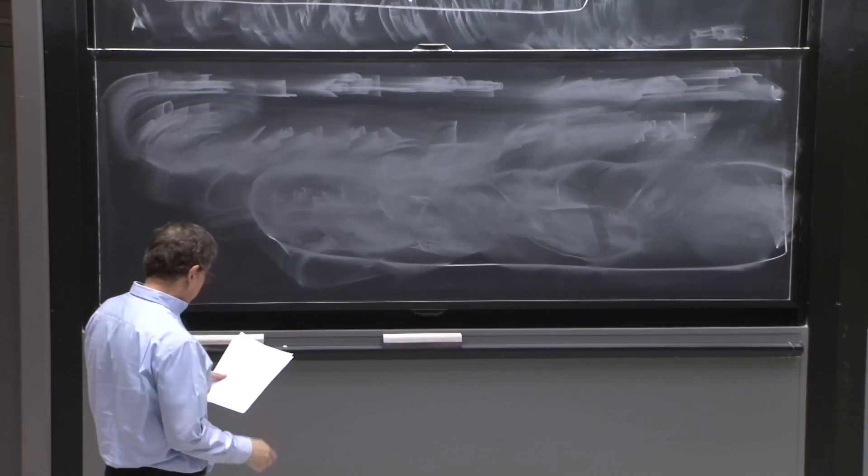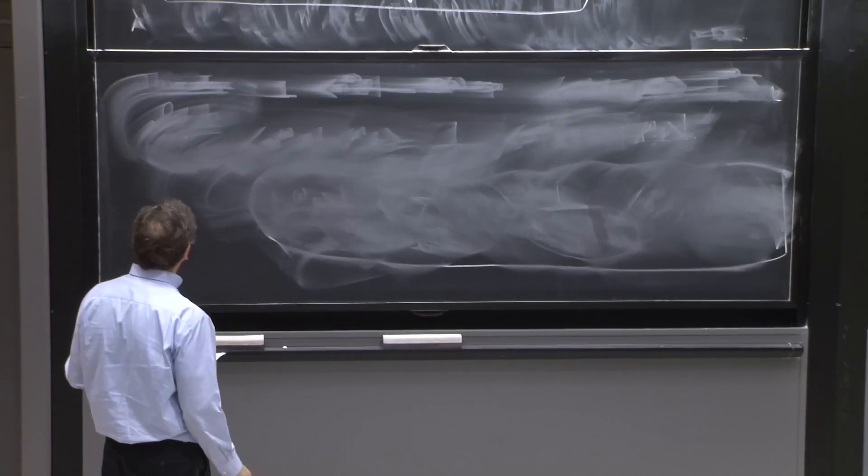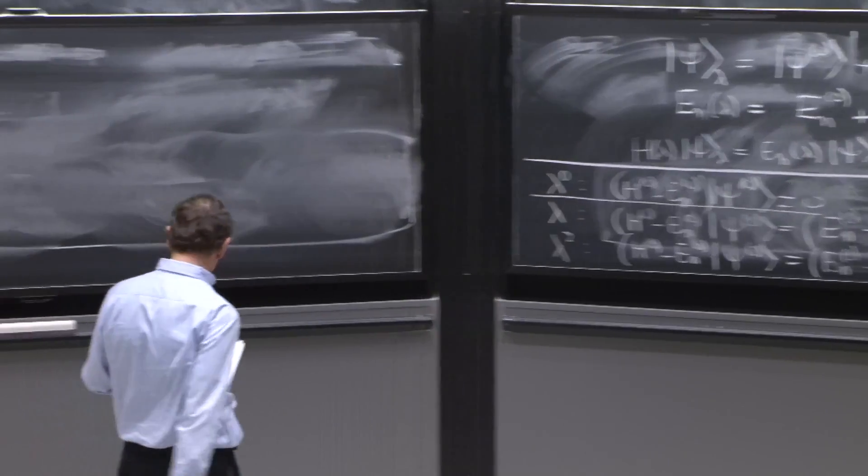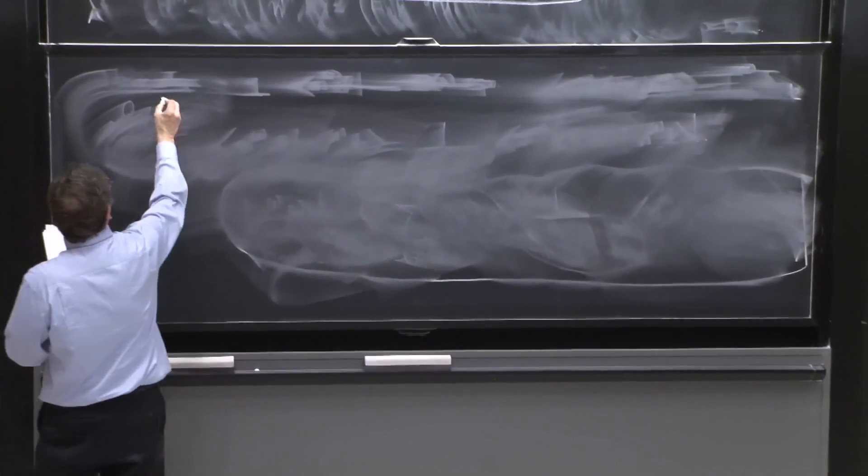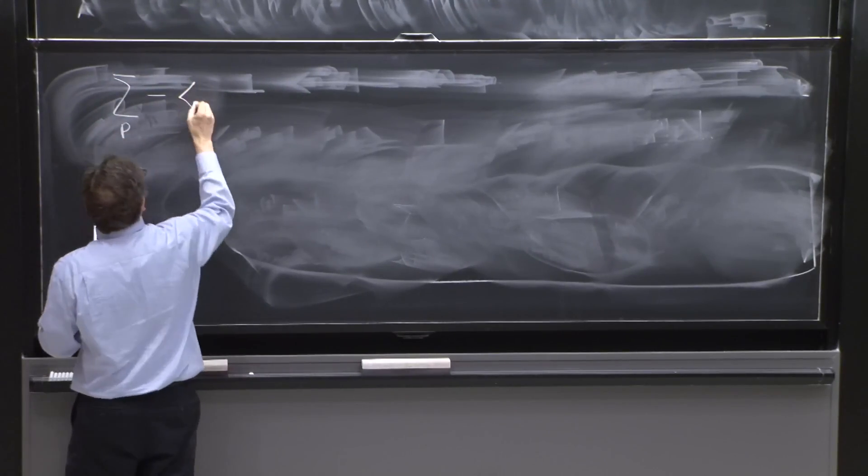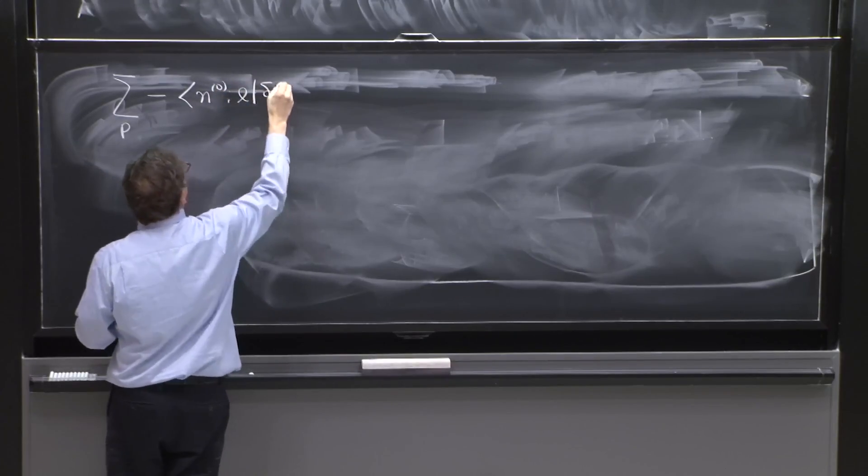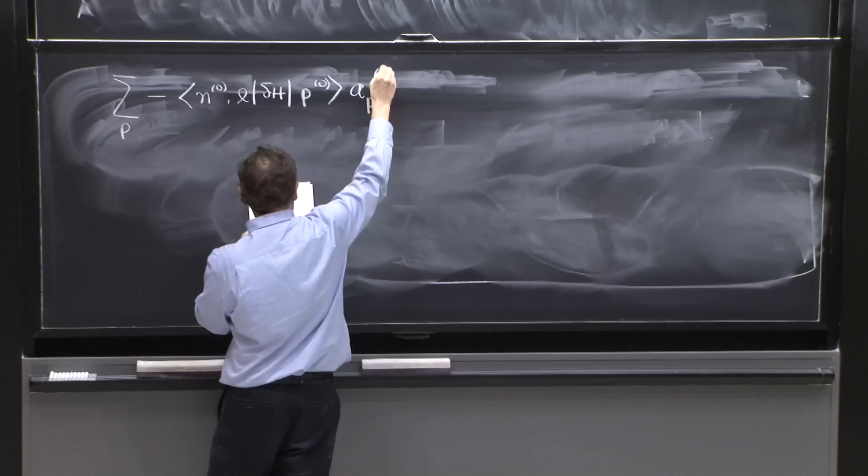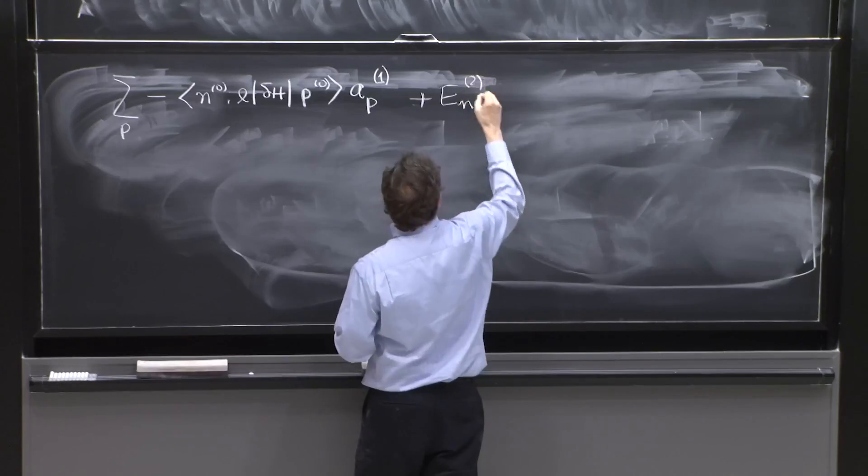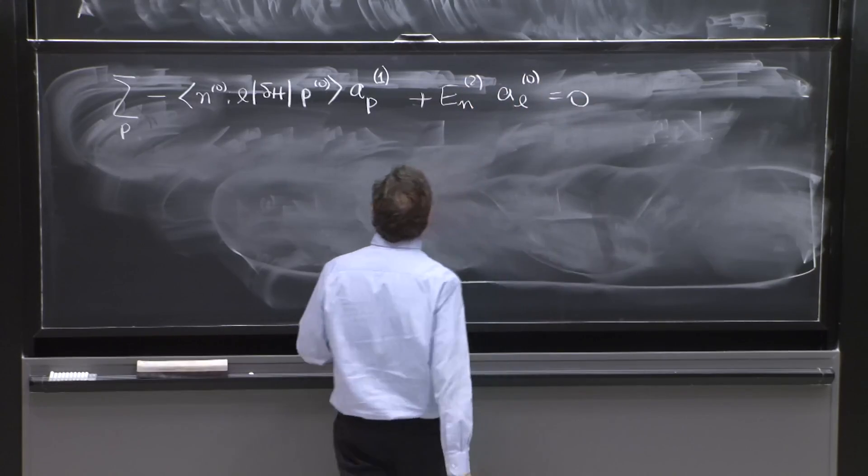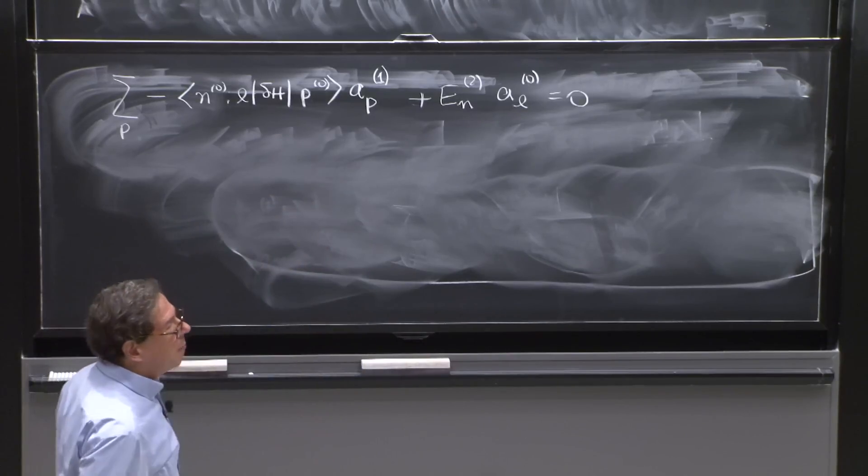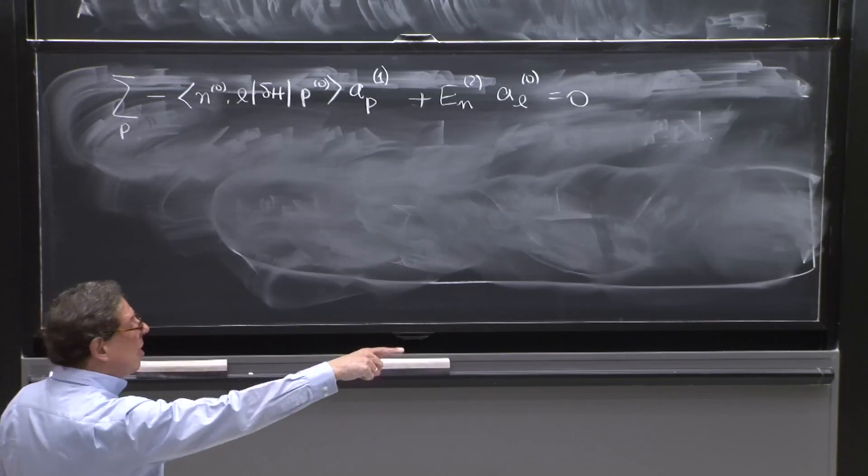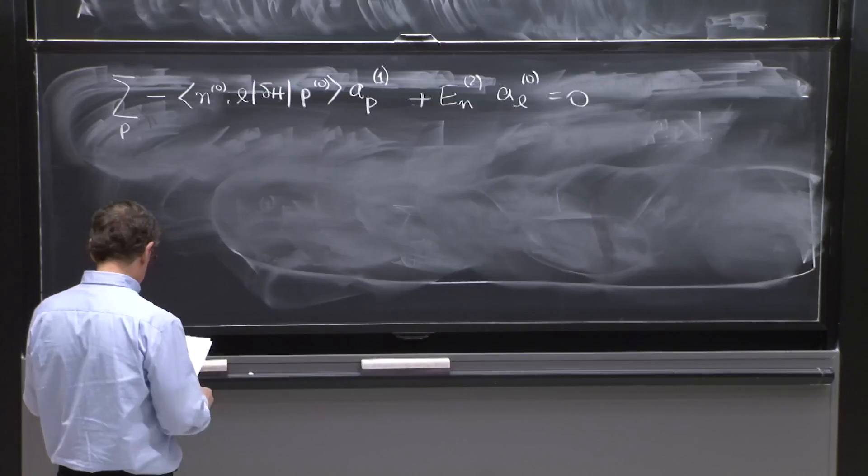So I have to do a little bit of algebra with this left hand side. I can put here this A_P^1 times the P0 states there. So on the left, it will be minus the sum over P n0 L delta H P0 times A_P^1 plus E_n^2 A_L^0 equals zero. Now I just have to copy that thing there. And I better copy it, because we really need to see the final result. It's not that messy.